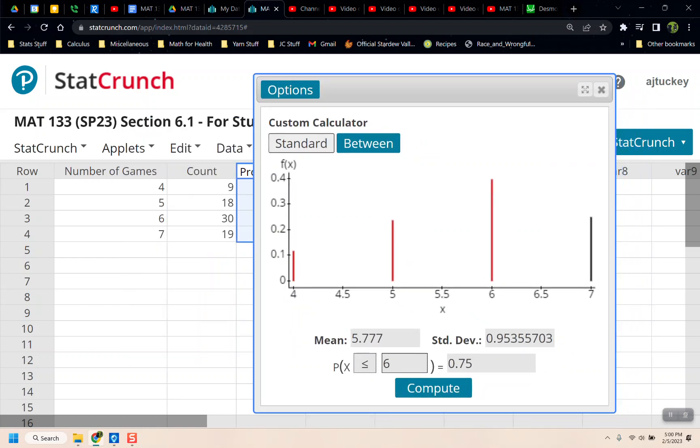And the mean is right here. It's 5.777, it says mean right there. And the standard deviation is right there. And if you're wondering, this is actually figuring out probabilities for us. So if I wanted the probabilities of, say, greater than 6 games, which we just did on the previous page, there it is, 0.645.